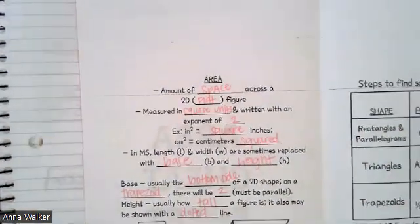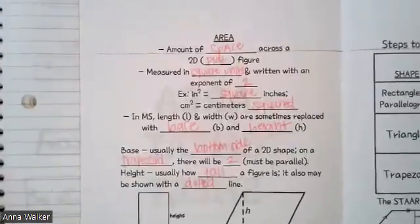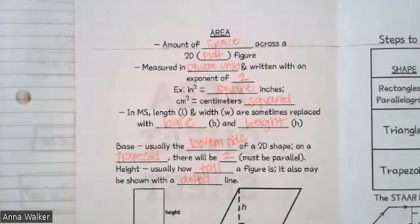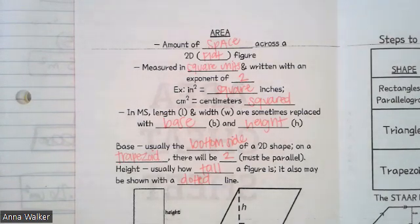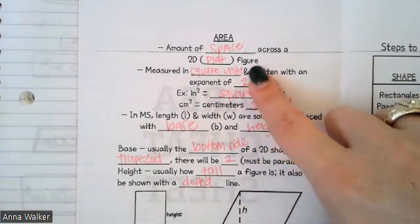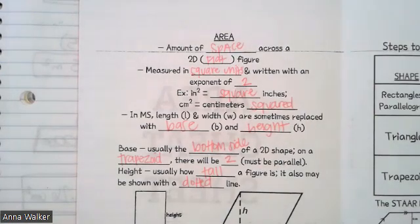So let's just go over the different aspects. I've kind of already filled in the blanks, so if you want to pause and fill them in, or you can fill them in as I explain it — it's up to you. But let's talk about what area actually is. Area is the amount of space across a two-dimensional figure, or what's known as a flat figure. And because we're working in two-dimensional space, we have to make sure that when we're writing down our units, we write them a certain way as well.